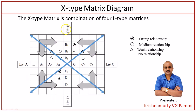If you want correlation across four L-type matrices — list A and list B (first L), list B and list C (second L), list C and list D (third L), and list D and list A (fourth L) — then you use an X-type matrix diagram, which enables comparison between items across all four L-type matrices.